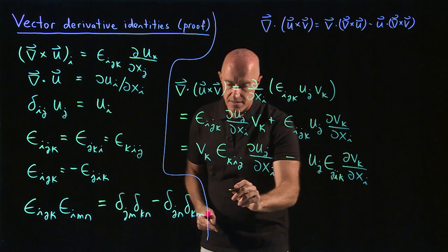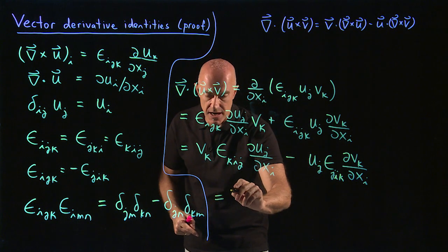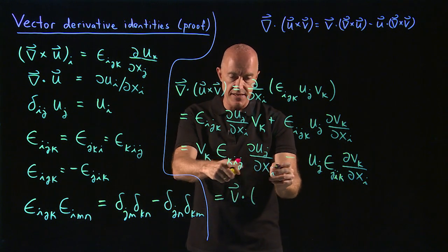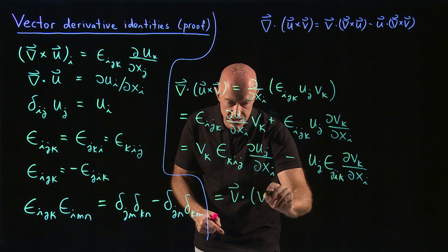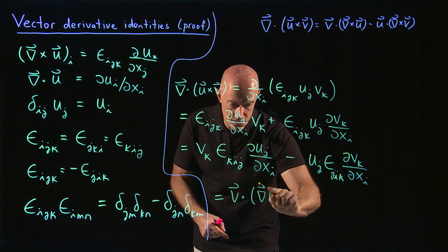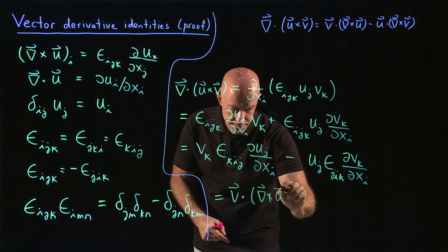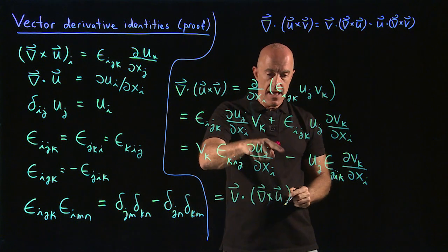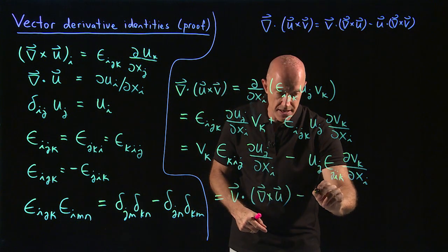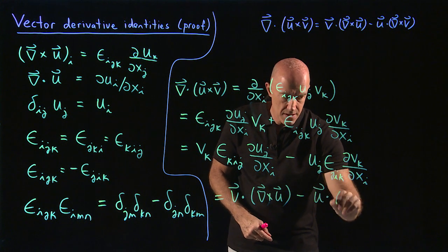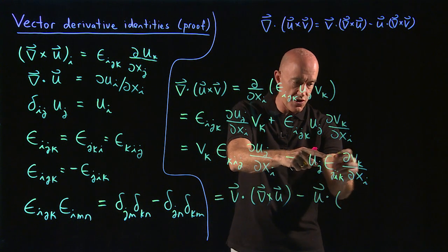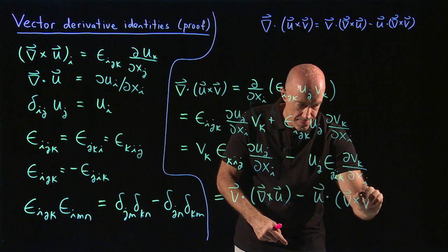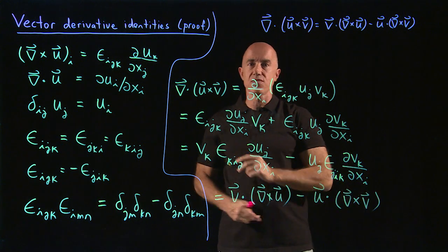We're almost done. So this is just the dot product of v. And this epsilon_kij du_j/dx_i is just the curl of u. Del cross u. And then minus, then this is the dot product of u. And this term here, then, is just the curl of v. And that's what we wanted to prove.